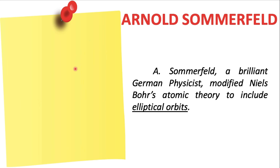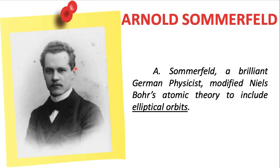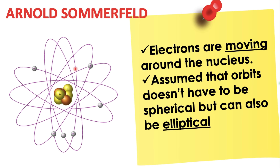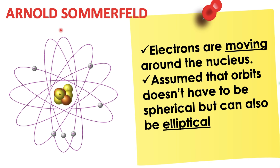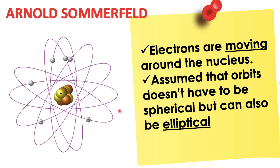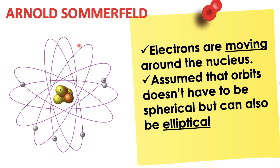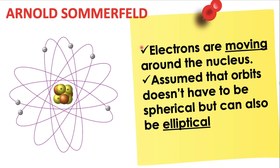Now let us proceed to Arnold Sommerfeld. He is a brilliant physicist who modified Niels Bohr's atomic theory to include elliptical orbits. According to him, electrons are moving around the nucleus, and he assumed that orbits don't have to be spherical but can also be elliptical. This is the most popular image of the atom nowadays.